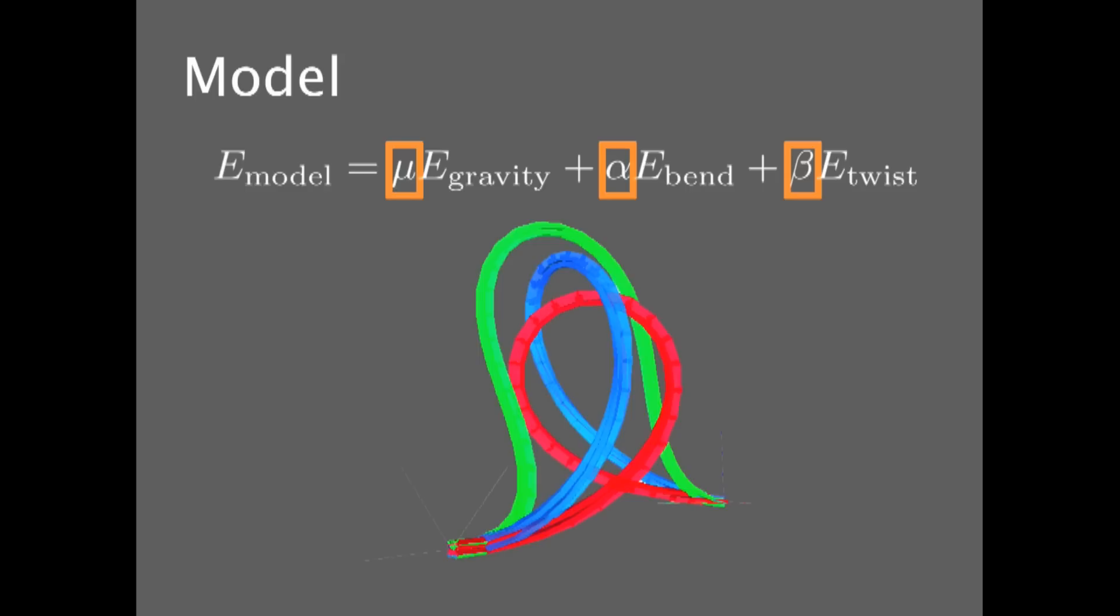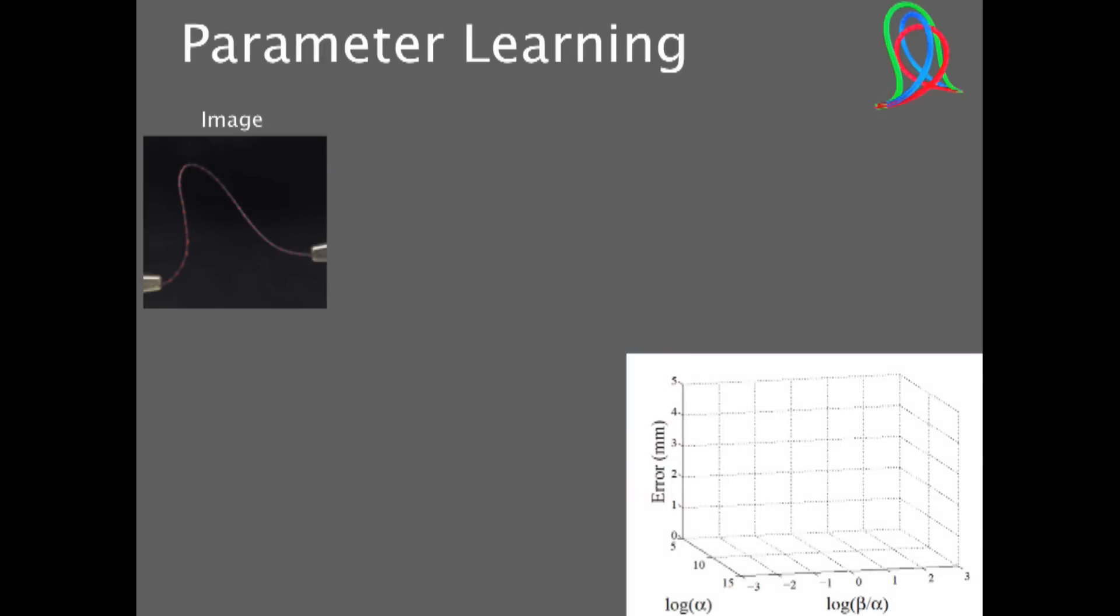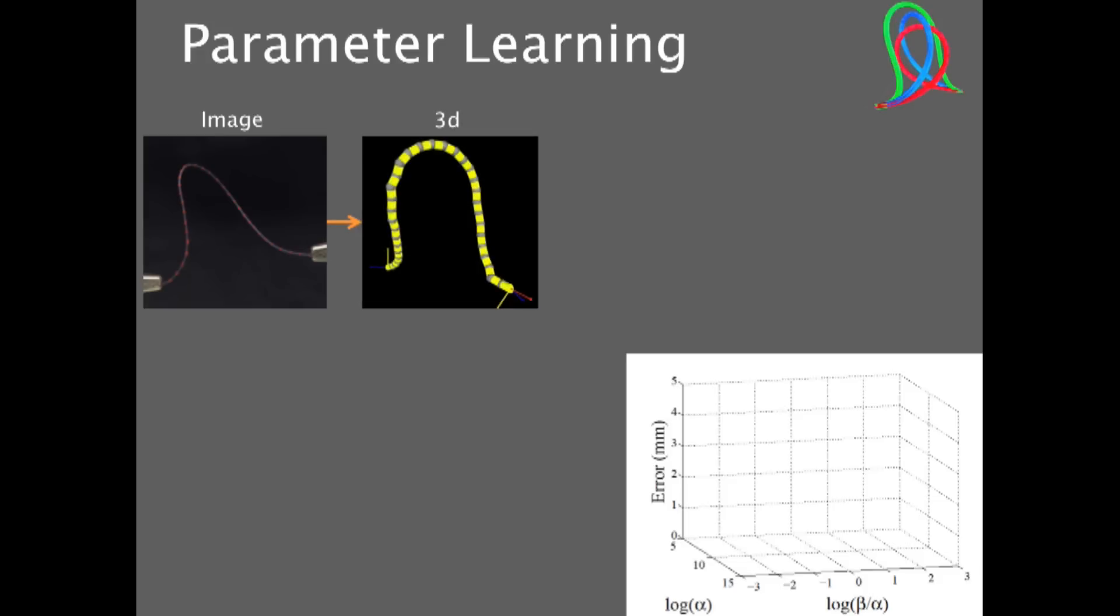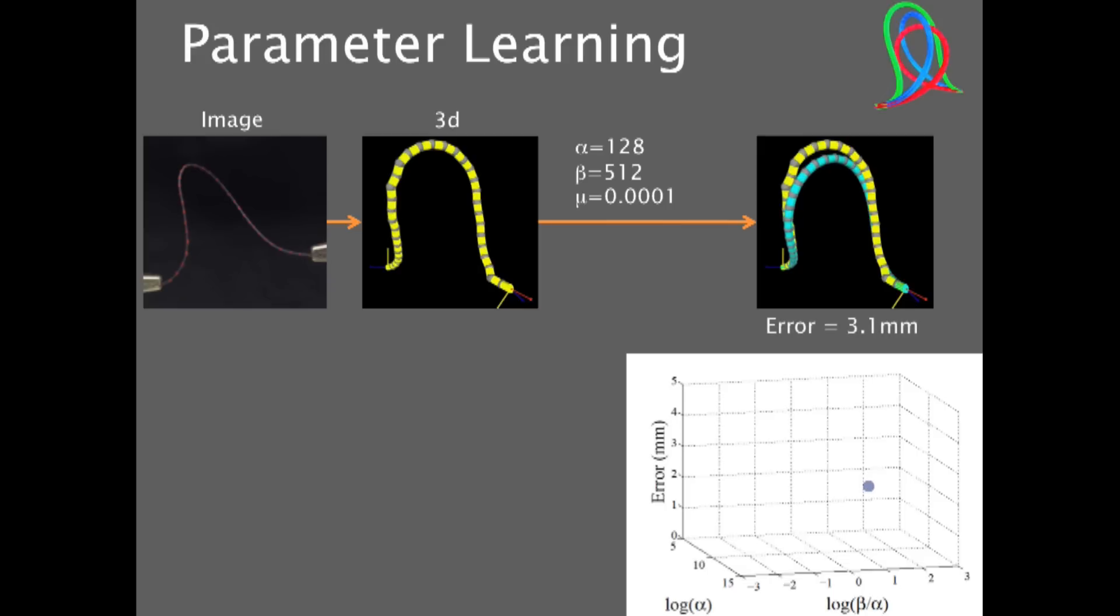So one thing we wondered is do these actual parameters correspond to different materials that you might find in suture? And we set out to discover whether this was true. So what we tried to do is we tried to actually learn the different parameters of the model. So first, we took a set of images from labeled data. Then we hand labeled them in order to find the 3D configuration of the object. And then we picked a set of parameters in order to try. And we wanted to see whether the minimum energy configuration with this set of parameters was going to correspond to the data that we saw in real life. So what we did is we fixed those parameters, ran our simulation, and found an error, which corresponds to how far you moved away from the configuration that you saw. And we plotted this error.